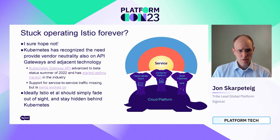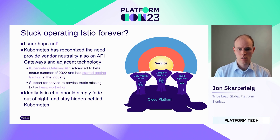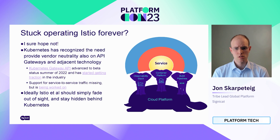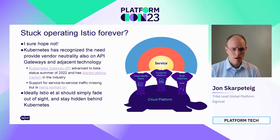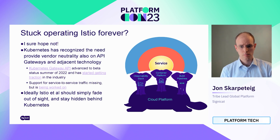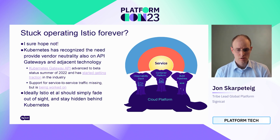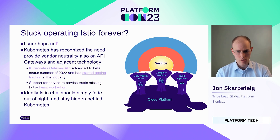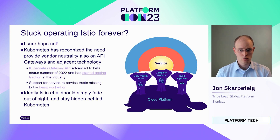The Kubernetes project has recognized the need to provide vendor neutrality also on API gateways, and the Gateway API is getting some traction and starting to make progress. There's still missing support for service-to-service communications. But assuming this is successful and gets into the official Kubernetes project, that opens options for vendors — the different cloud platforms could offer this as a managed service. Then it doesn't matter so much if it's Istio or something else implementing it. As long as the API is readily available, you just use it and expect it to work, and you can offload the problems of operating it to vendors instead.